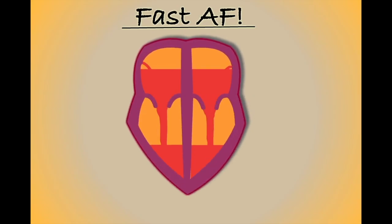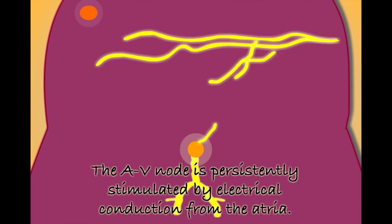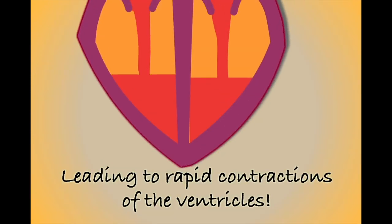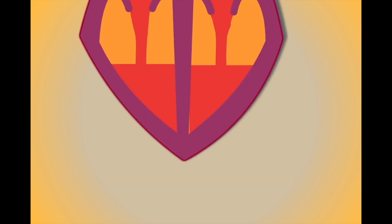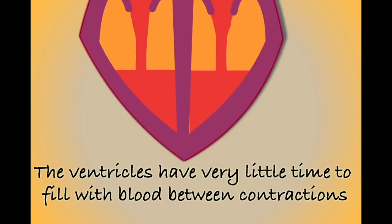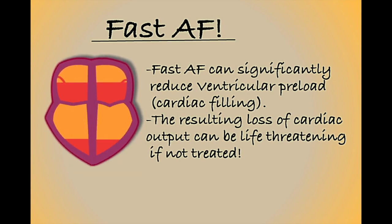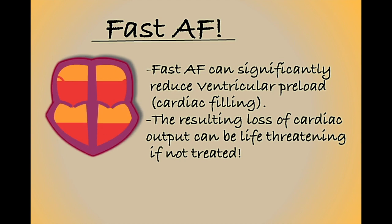AF becomes more serious when it leads to a fast ventricular rate. The irregular electrical activity in the atria can lead to persistent stimulation of the ventricles. As a result, the ventricles have very little time to fill with blood between contractions, leading to a reduction in stroke volume. Fast AF can significantly reduce cardiac output and has the potential to be life-threatening if not treated.